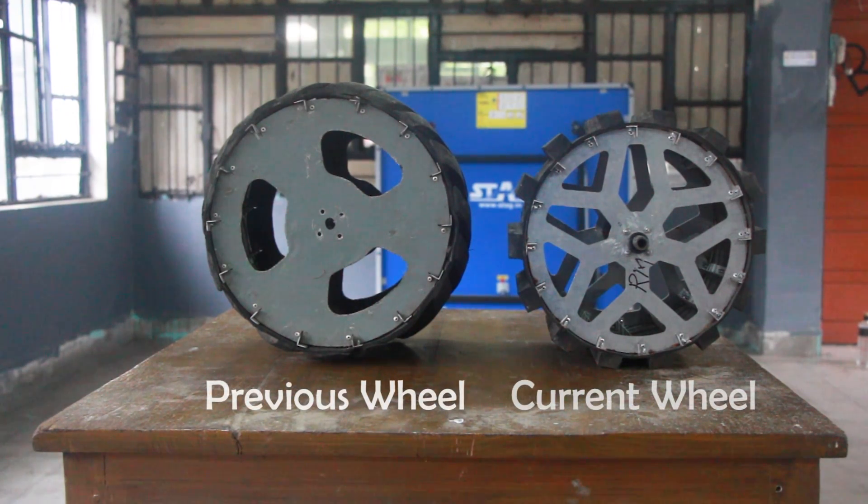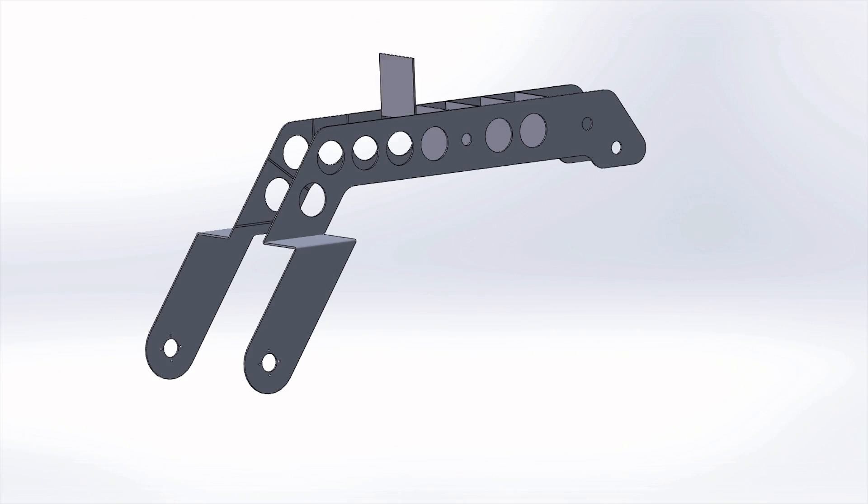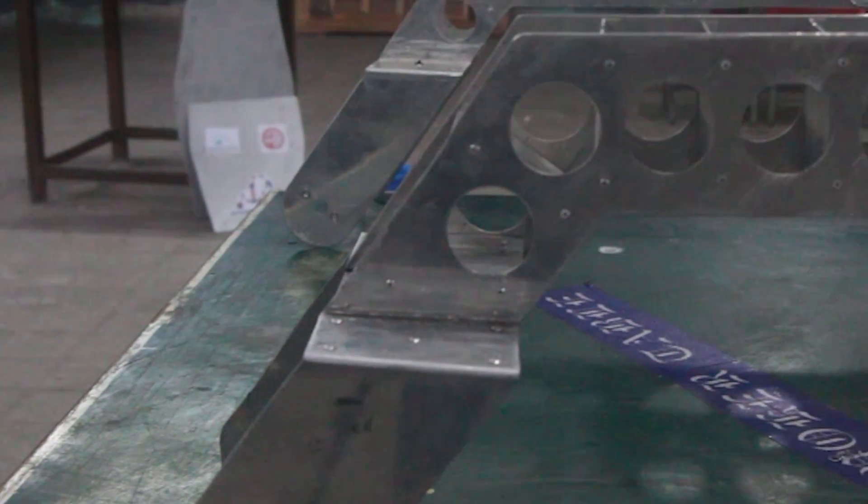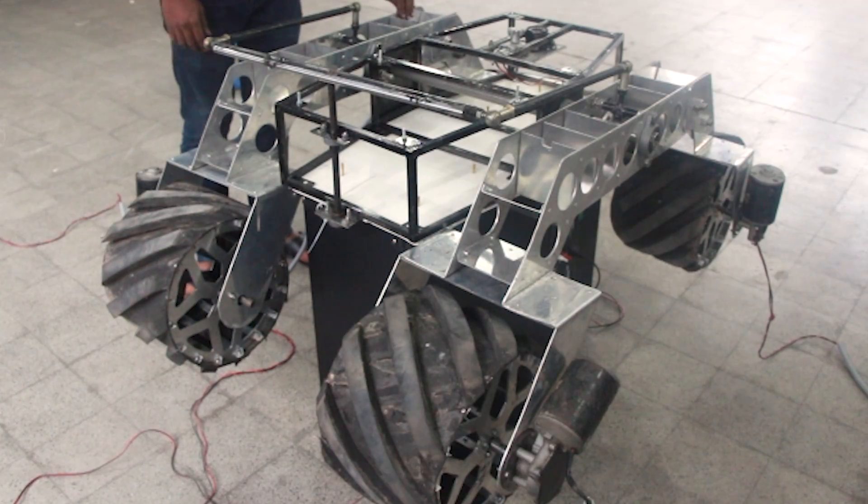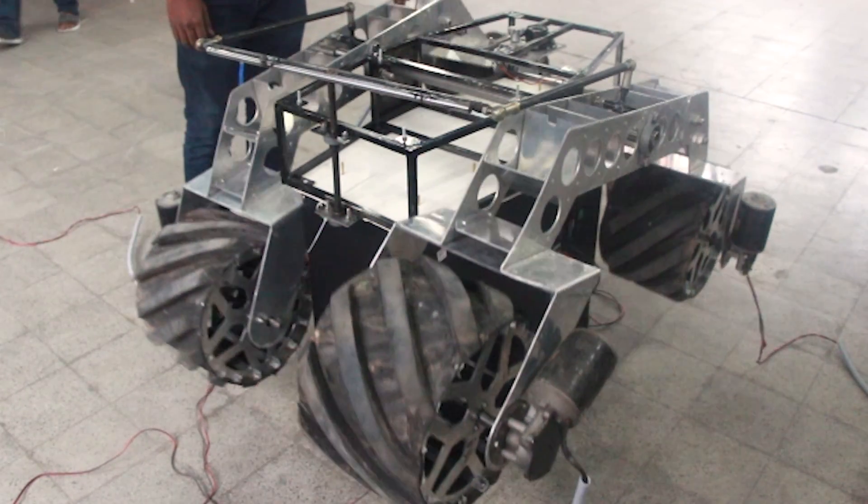After extensive study of terra mechanics we have modified the wheel design from its previous one. The suspension was completely designed in SolidWorks and intense stress analysis was conducted prior to fabrication. 3mm aluminum sheet was used for better stability, durability and lightweight at the same time.